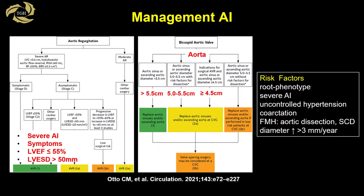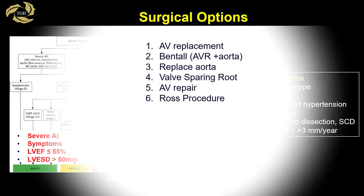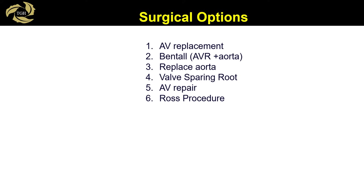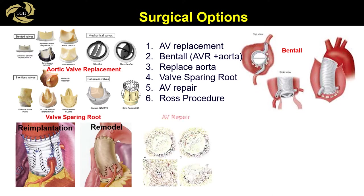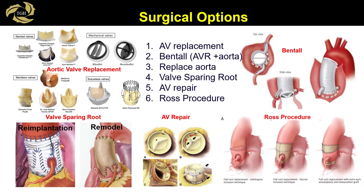Intervening in bicuspid valve aortopathy depends on size and presence of risk factors. Surgical options include traditional aortic valve replacement, replacing portions of the aorta combined with valve and aortic replacement, sparing the native valve — the Ross procedure — or isolated aortic valve repair. For optimal results, the latter three options should be performed at a center of surgical excellence.